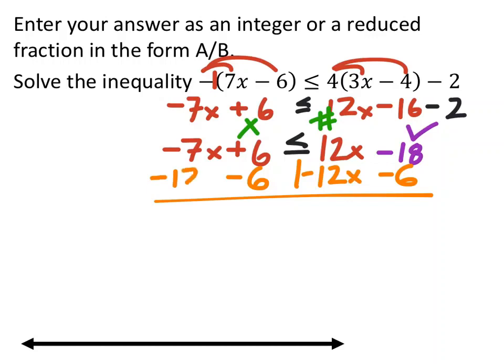Here's what happens: this positive 6 zeros out and same with the 12x right there zeros out. I got -7x - 12x, which is -19x.